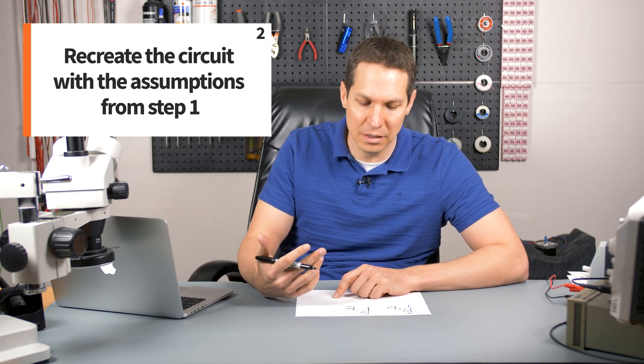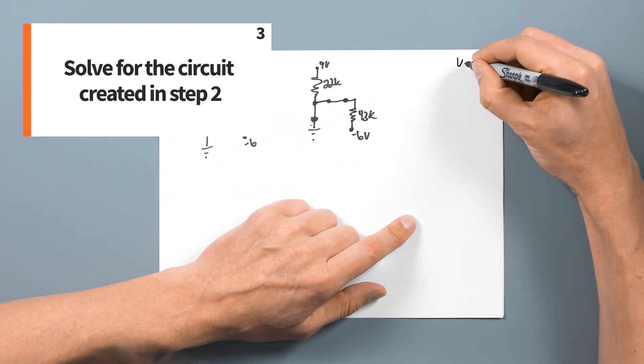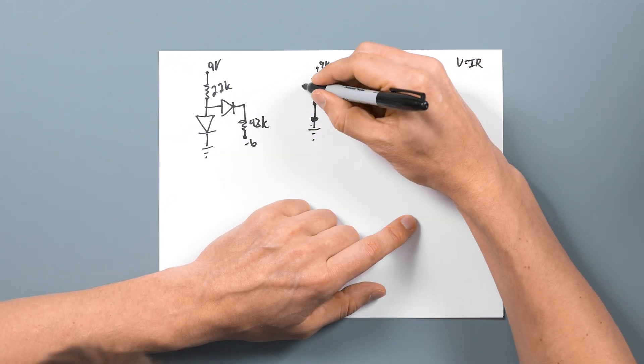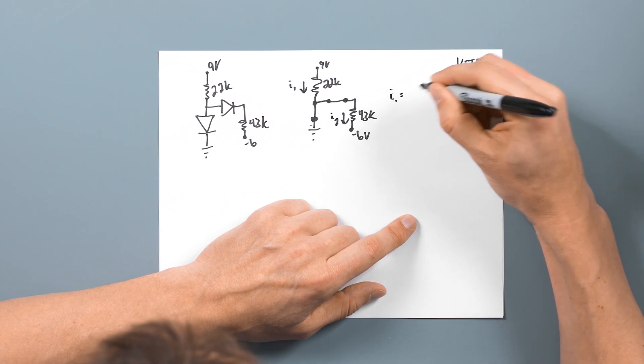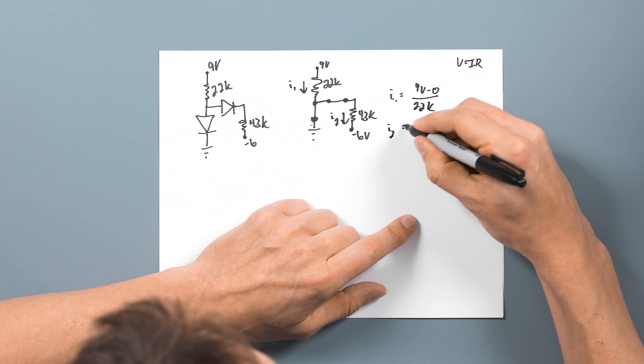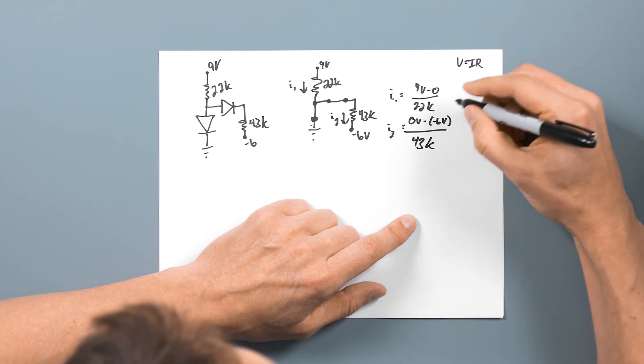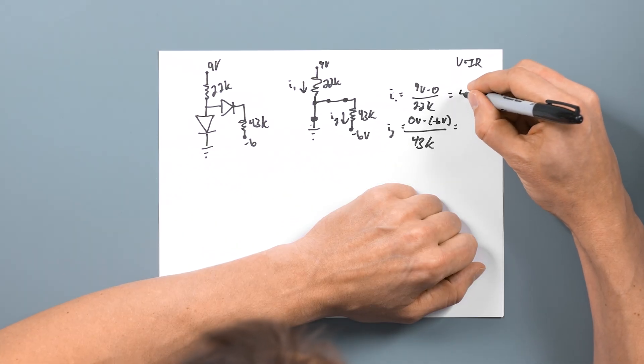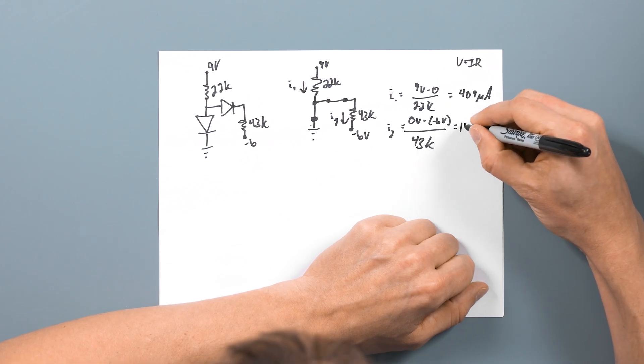The third step is now doing some basic circuit analysis to see if our assumptions actually work. So in this case, we are going to have basically two - let me do my Ohm's law in the corner like I always do, just keep things straight in my head. We're going to have our two currents right here. I'm going to call this I1 and I2. And I1 is simply nine volts minus zero volts over 22k. And then I2 is going to be zero volts minus negative six volts over 43k. And so let me throw that into a calculator really quick because there's no way I'm going to be able to do that in my head. And that comes out to be about 409 microamps. And this comes out to be about 140 microamps.